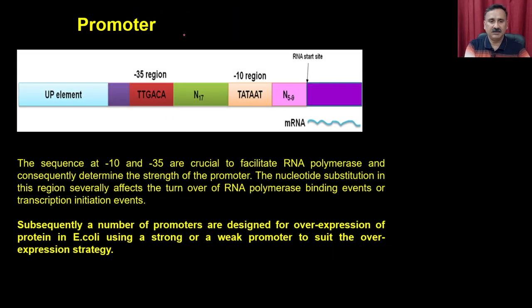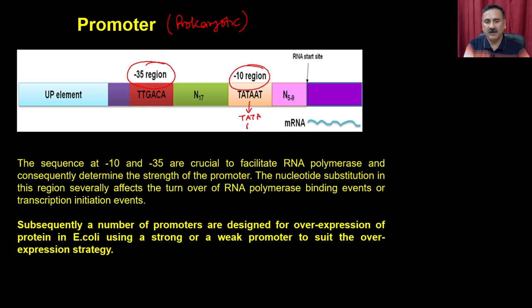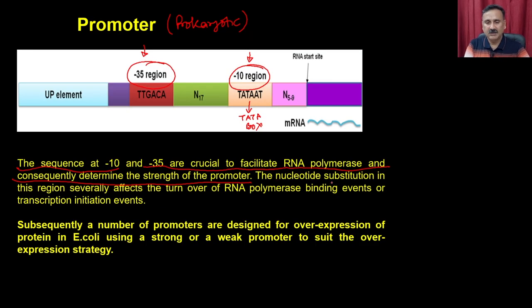As far as the promoter is concerned, in a prokaryotic system the promoter contains classical features such as the minus-35 region and the minus-10 region — the TATA box. The sequences at minus-10 and minus-35 are crucial to facilitate RNA polymerase binding and determine the strength of the promoter. The better these sequences are, the more efficiently the RNA polymerase will bind to these regions and produce better transcription. Nucleotide substitution in this region severely affects the turnover number of RNA polymerase binding and transcription initiation.